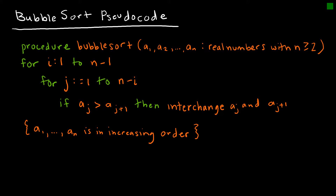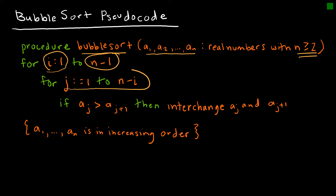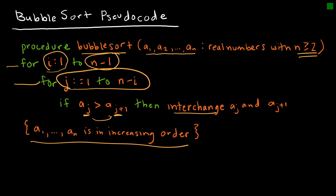Now let's look at the pseudocode for bubble sort. The procedure works on a list of at least two values — if we had one value, we wouldn't need to sort. We use a loop where i goes from 1 to n minus 1, and j goes from 1 to n minus i. We compare values at position j and j+1, and if the value is greater than the one after it, we interchange them. The output is our values in increasing order.